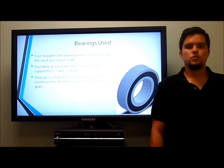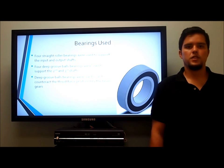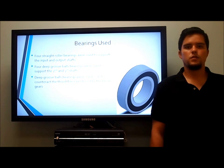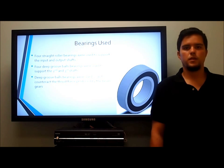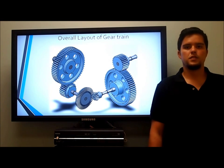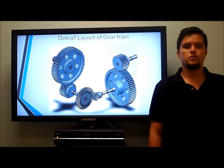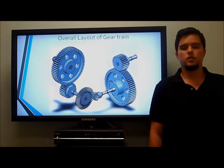Four straight roller bearings were used to support the input and output shafts. Four deep groove ball bearings were used to support the second and third shafts. The reason for using deep groove ball bearings is to counteract the thrust force produced by the bevel gears. Next, Armando is going to discuss the specific detail of the various loads experienced in the gearbox.